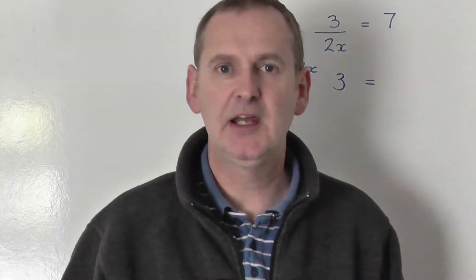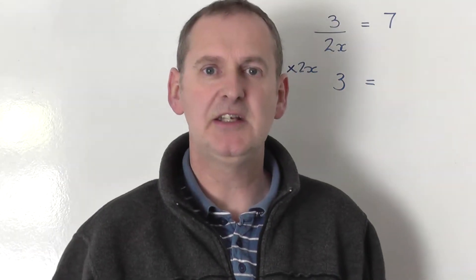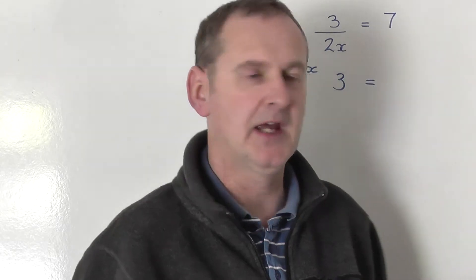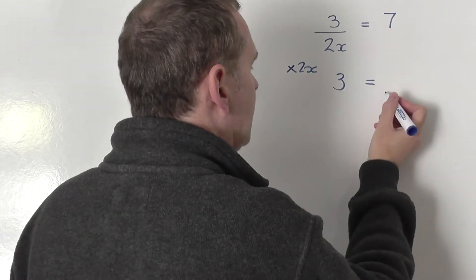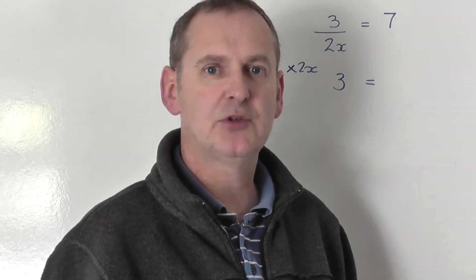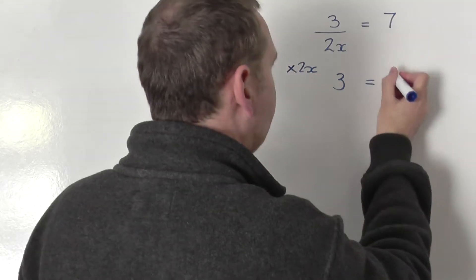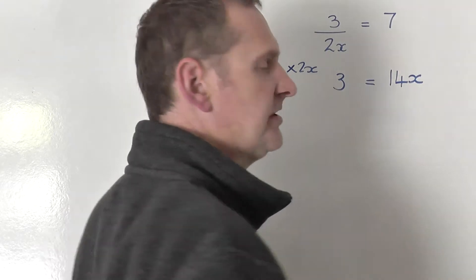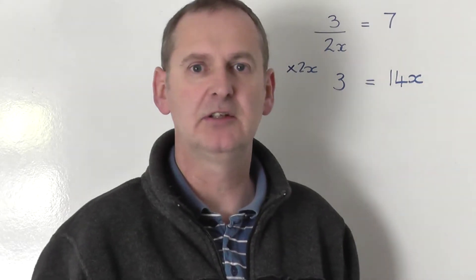So I've multiplied the left hand side by 2x, I need to multiply the right hand side by 2x. So I take the 7 and I multiply that by 2x. Well if you think about it, 7 times 2x, you will get 14x's. 7 lots of 2x is 14x's on the right hand side.